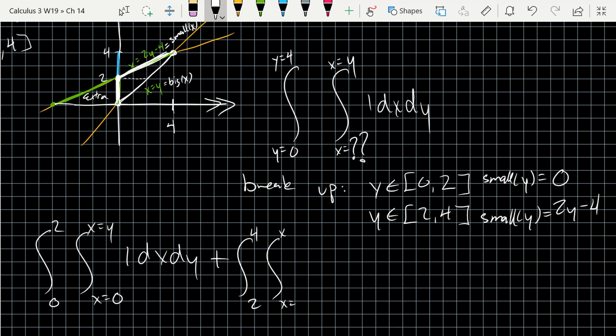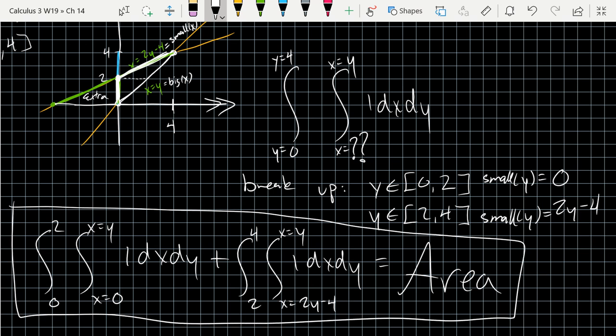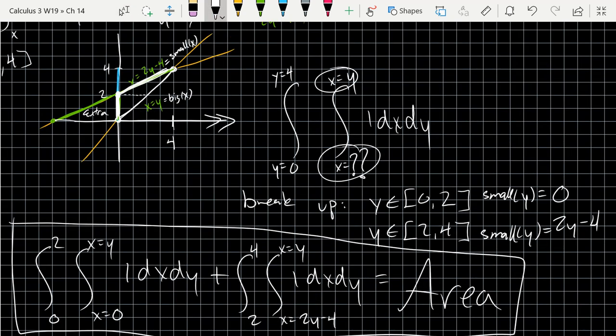And our inner bounds here. So our small is 2y minus 4. And our big is y. Any questions on this right here? So when I was grading, the most common error I saw were these two switched around. But nobody, including myself, split it into two separate areas, which is what you do to get the right answer. I luckily got the right answer because I never integrated. I used geometry. So I saw it was a triangle. Area was equal to the volume because I was integrating height 1. So my error didn't affect my answer because I used geometry.